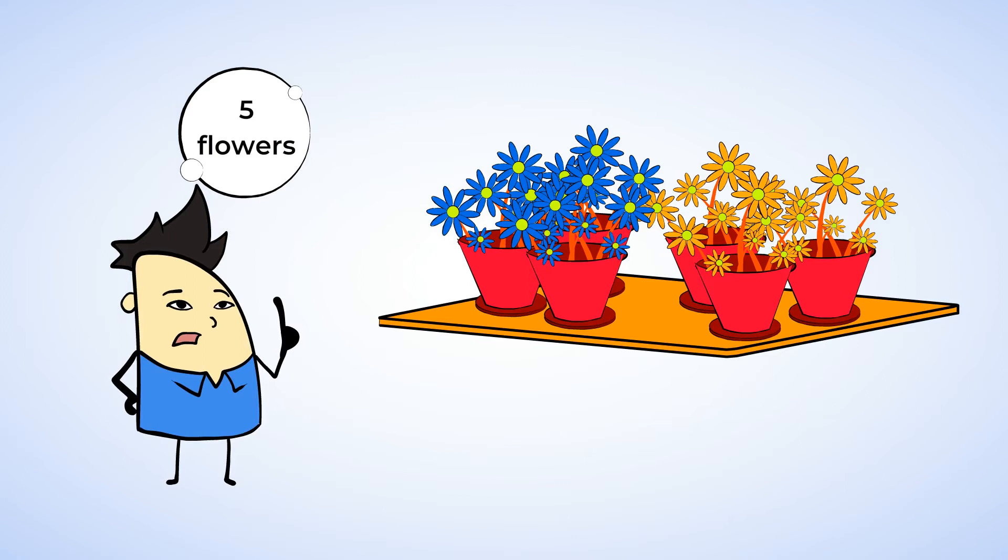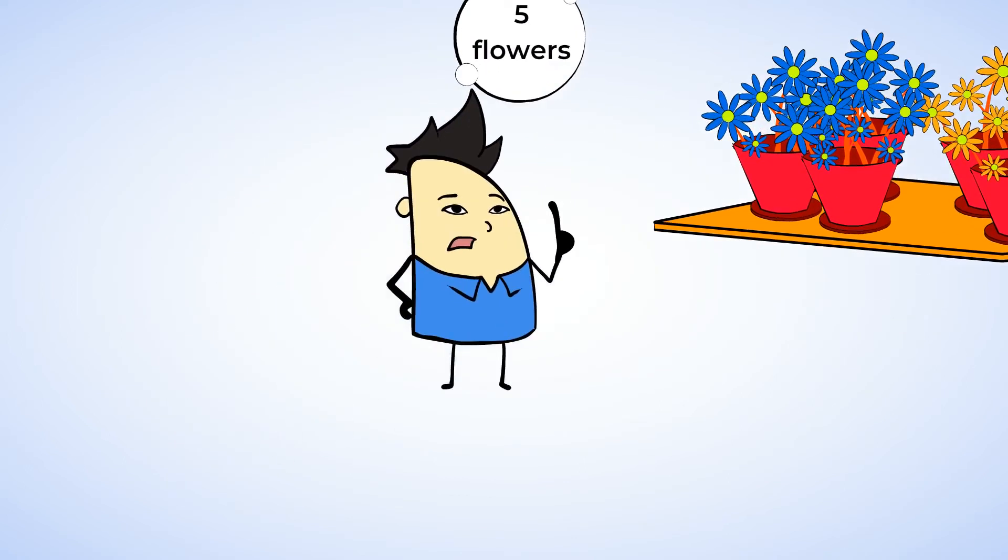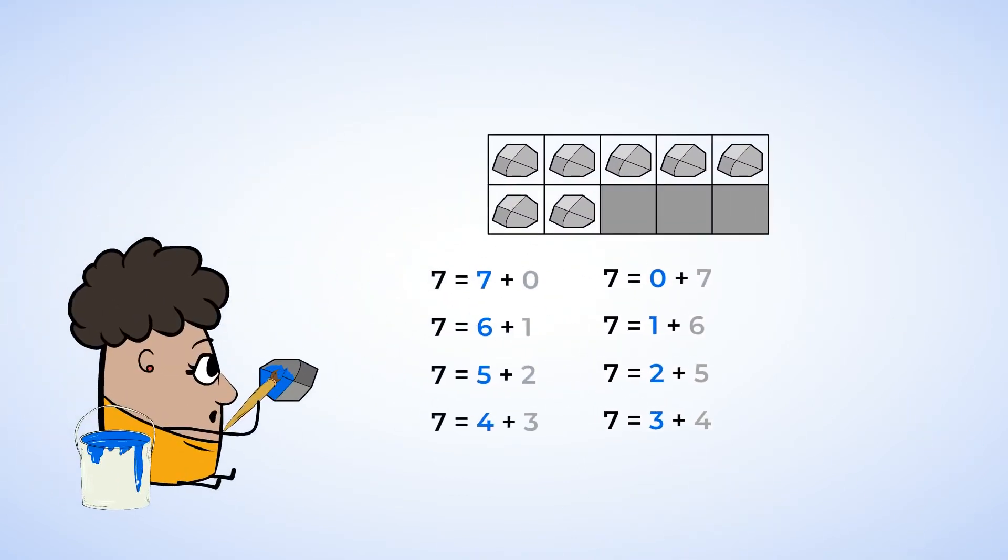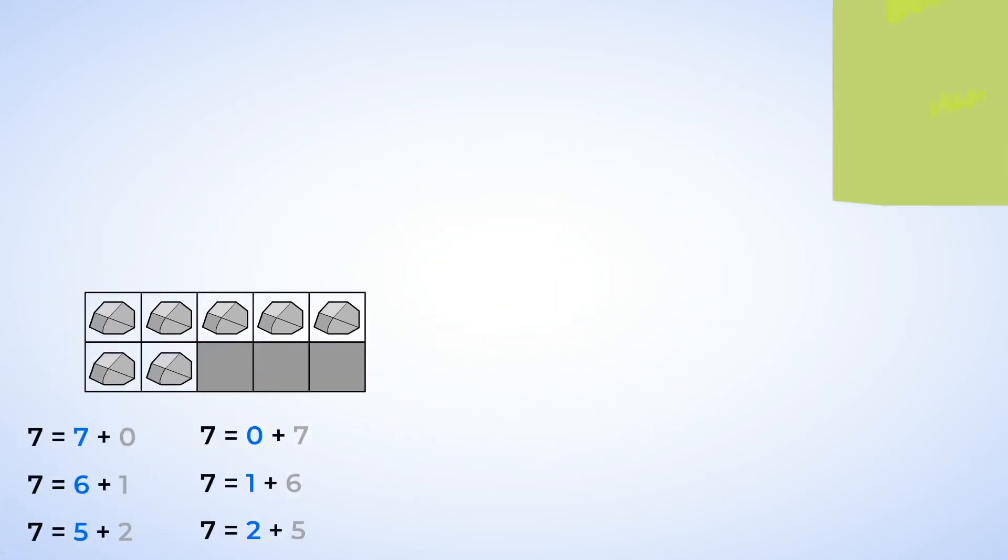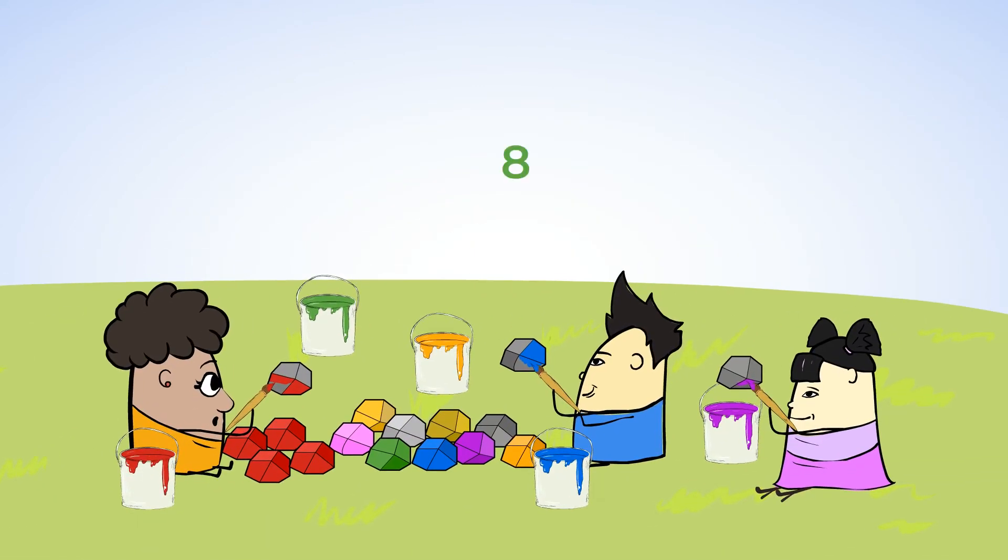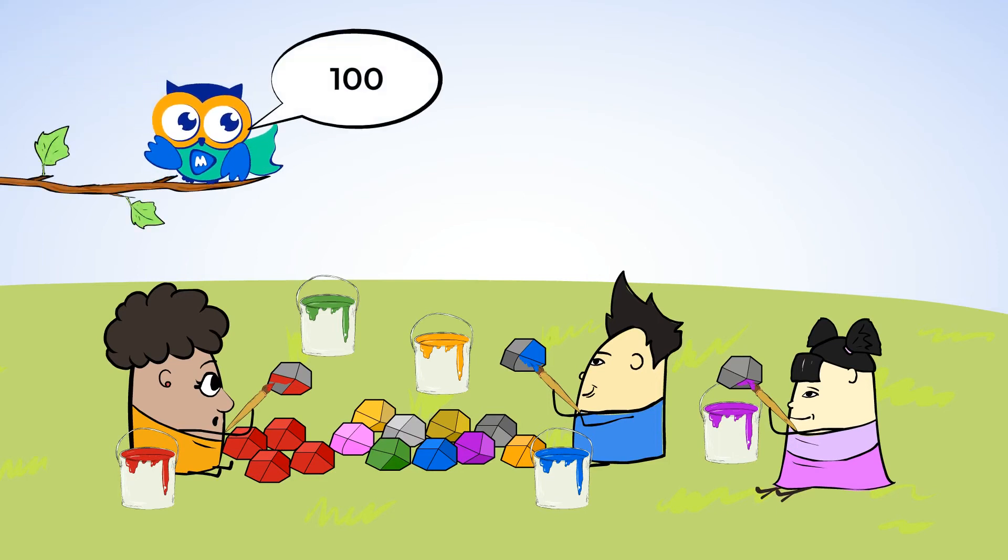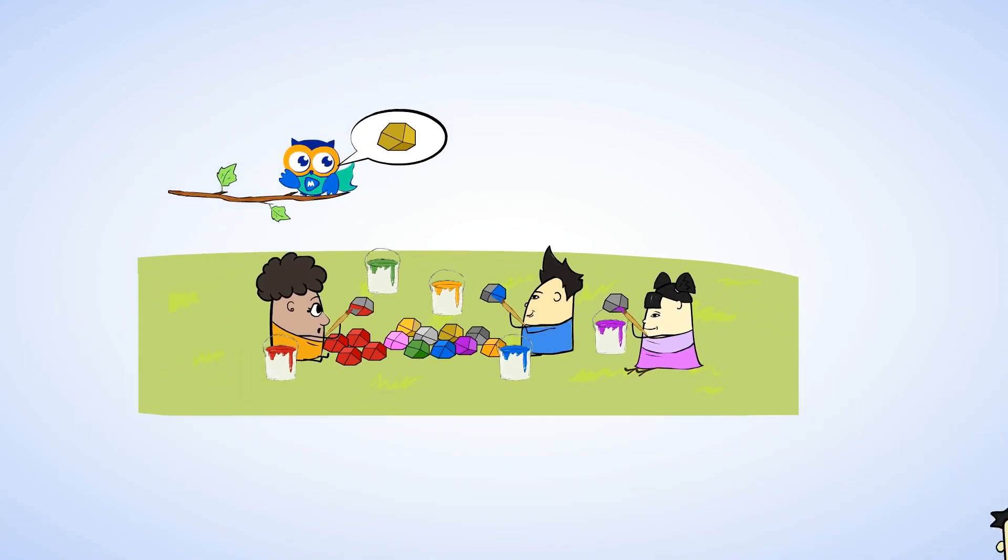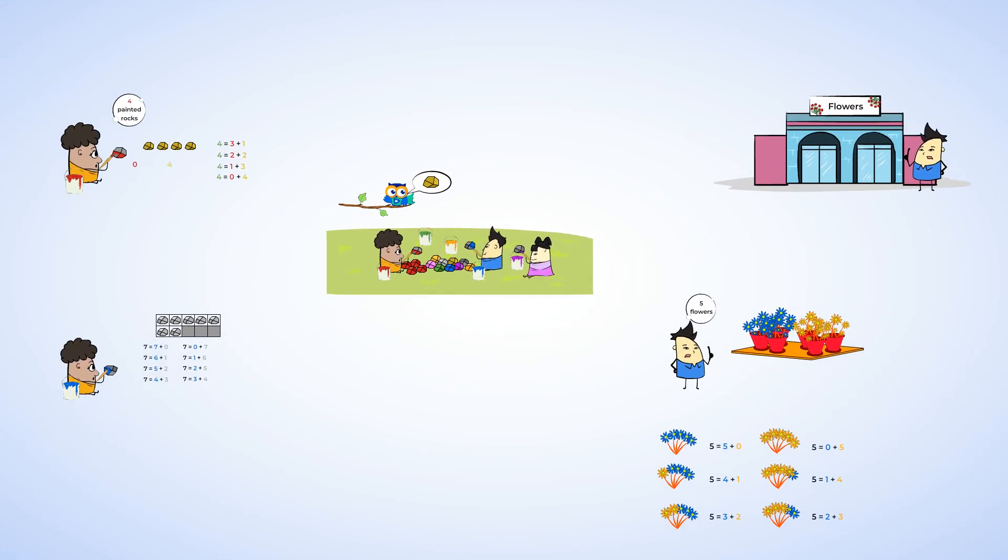Well done, you mighty brilliant minds. You can try drawing your own ten frame and using counters or coins, or even painted rocks to make different numbers. How many ways can you make the number eight, for example? And how about the number nine? Try it with your favorite number. As for me, I'm going to paint 100 rocks because 100 is my favorite number, and I'm going to paint both sides gold. Shiny. It might take me a while, so see you soon.